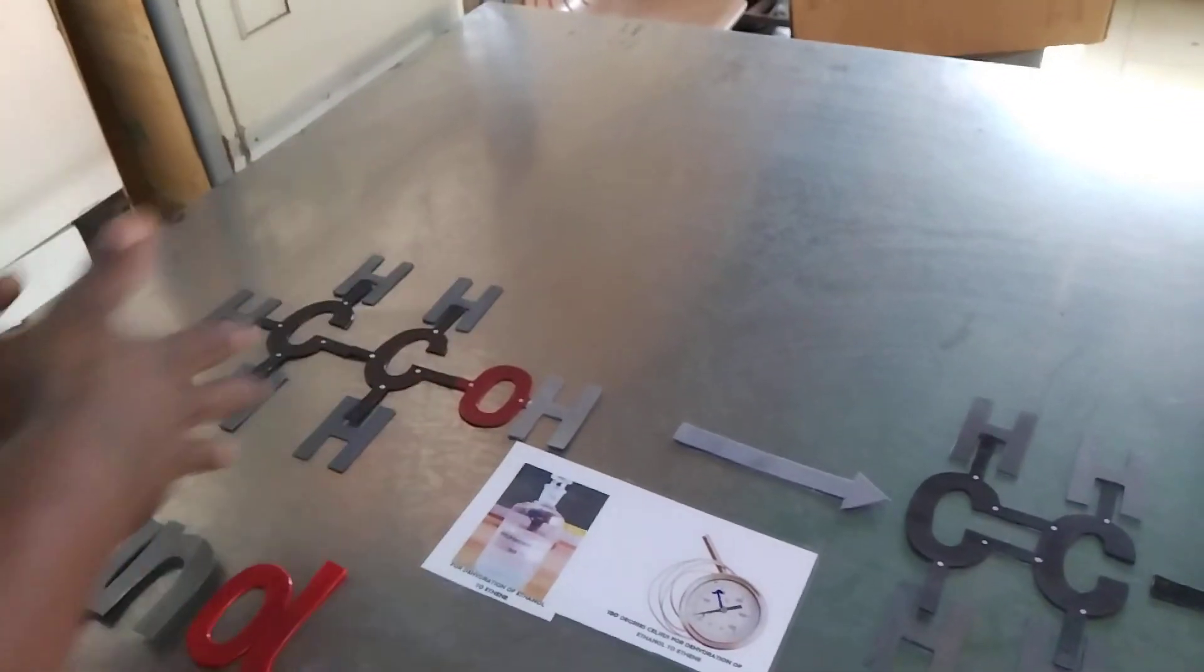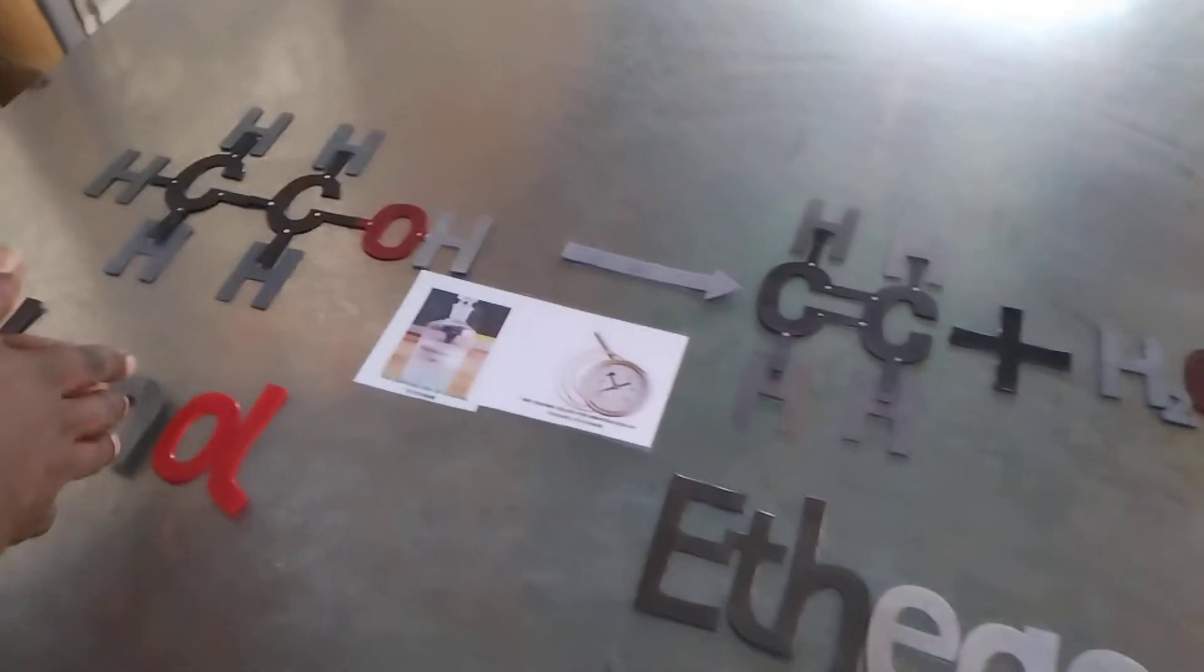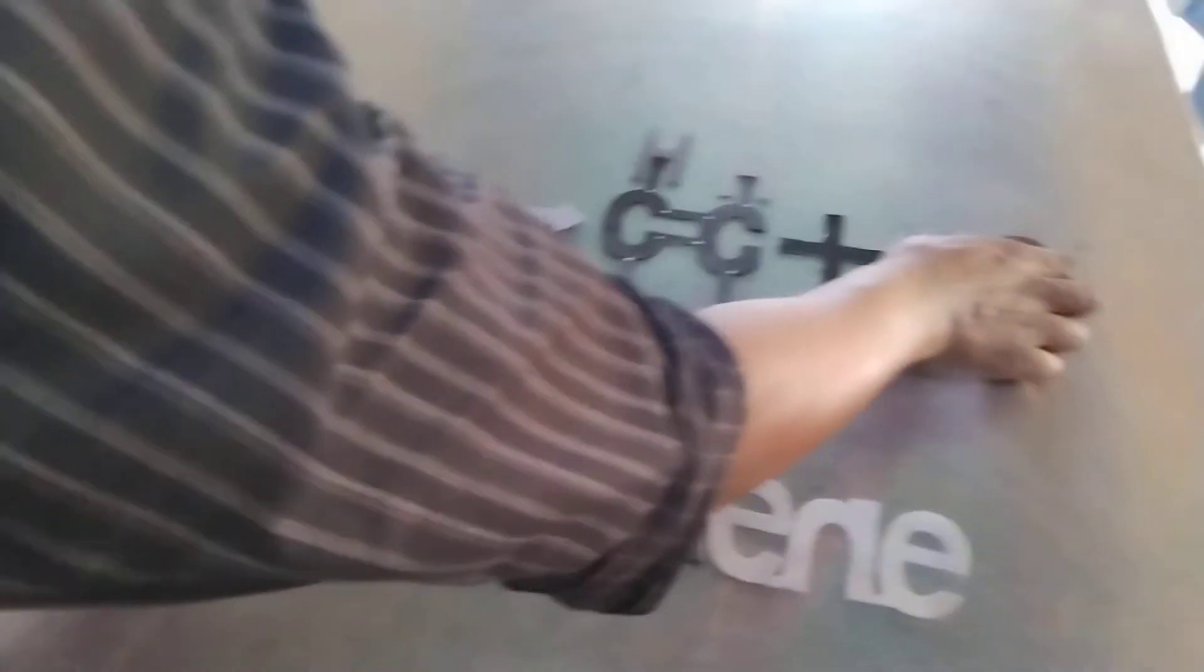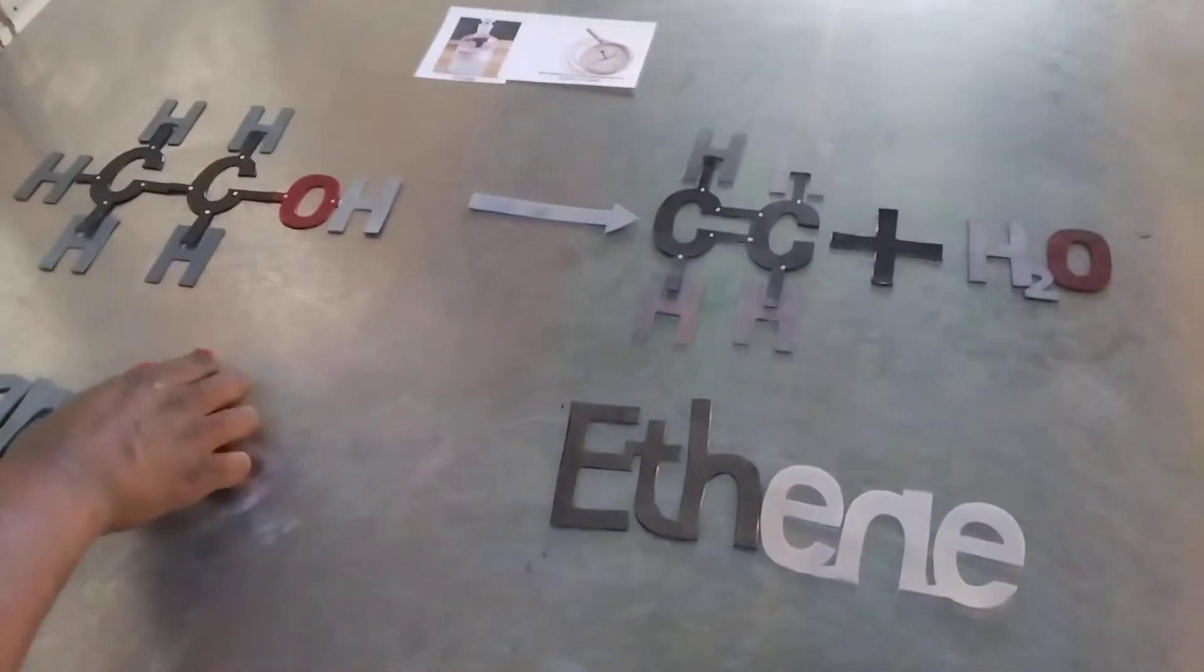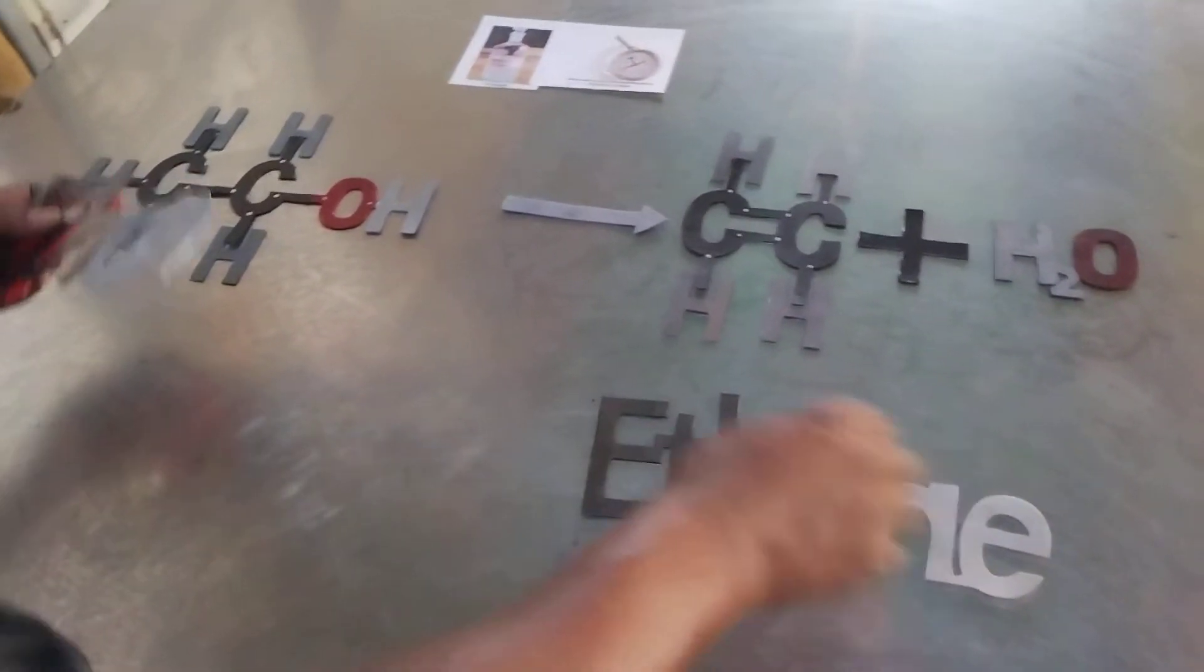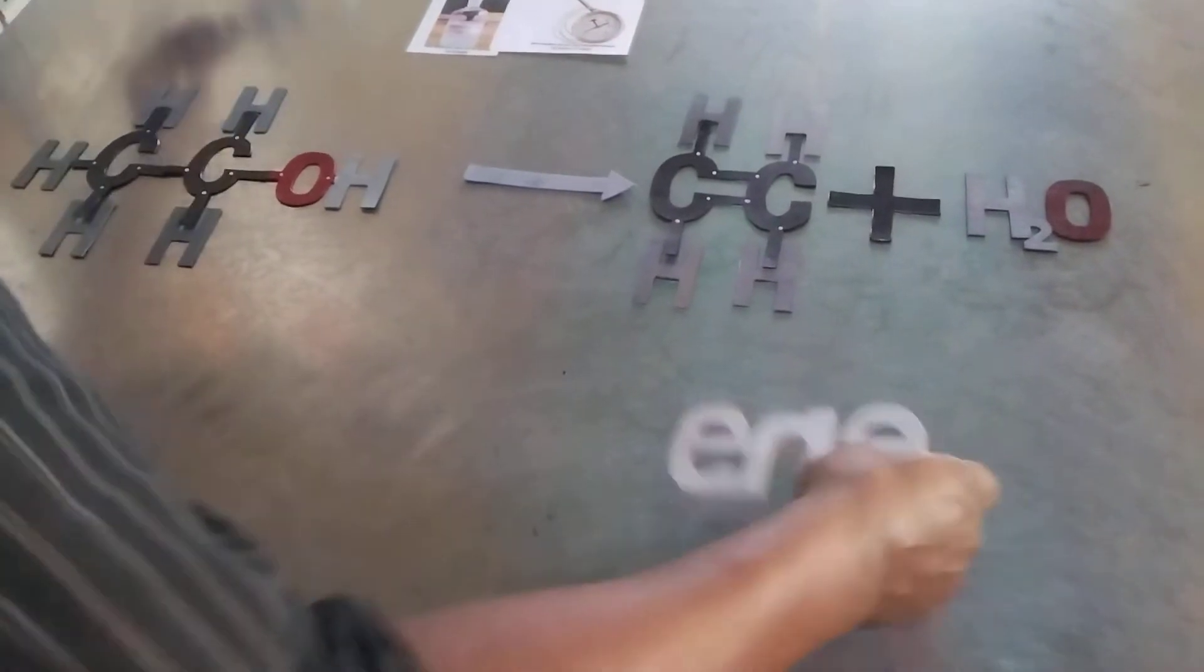Now water molecule is going to be removed from ethanol to form ethene and this water molecule here. Now to demonstrate what usually happens, you have your ethanol here. This is your ethanol.